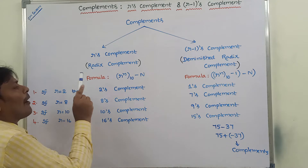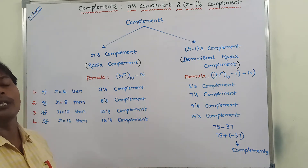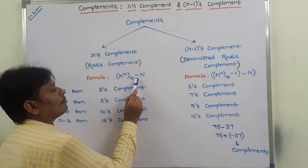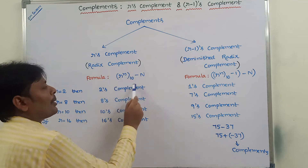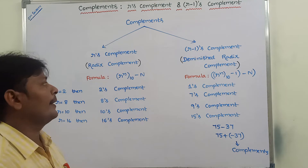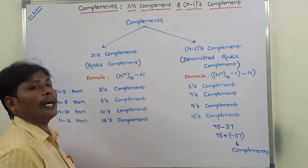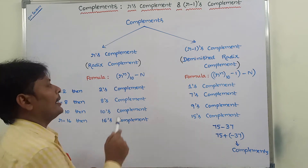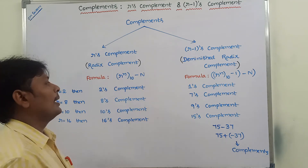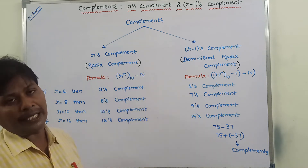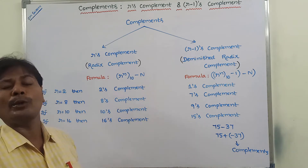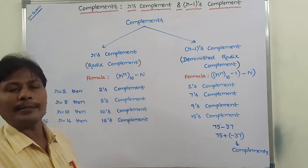Now, what is the formula we have to use to find out R's complement? That is R^N (base N) minus N. By using this formula, we can find out any complement of a given number. R is nothing but the base or radix. N is nothing but the number of digits in the given number. Capital N is nothing but the given number. By using this formula, we can find out any complement of any number system.